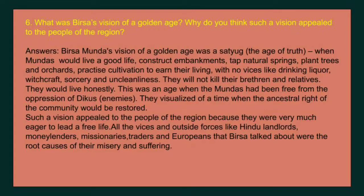Question number six: what was Birsa's vision of a golden age, and why did such a vision appeal to the people of the region? Birsa Munda's vision of a golden age was a Satya Yug — the age of truth — when Mundas would live a good life, construct embankments, tap natural springs, plant trees and orchards, and practice cultivation with no vices like drinking liquor, witchcraft, or sorcery. They would not kill their brethren and would live honestly, free from the oppression of the Dikus (enemies), with their ancestral rights of the community restored.